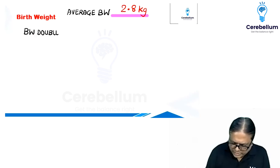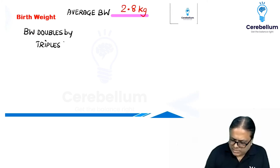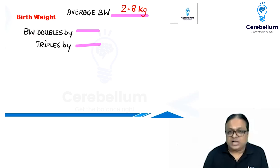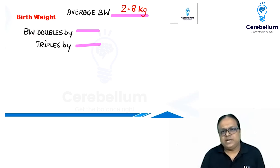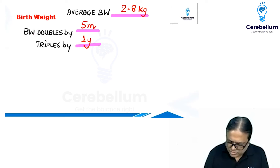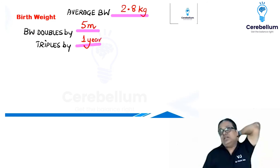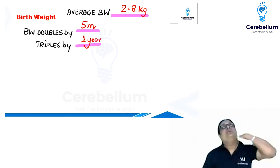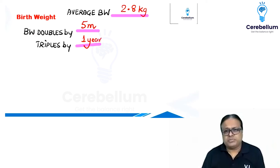Two questions from FMG papers: birth weight doubles by when, and birth weight triples by when? Birth weight doubles by five months. It triples by one year of age. It quadruples by two years of age, but the doubling and tripling milestones are the ones that have been asked in the exam.